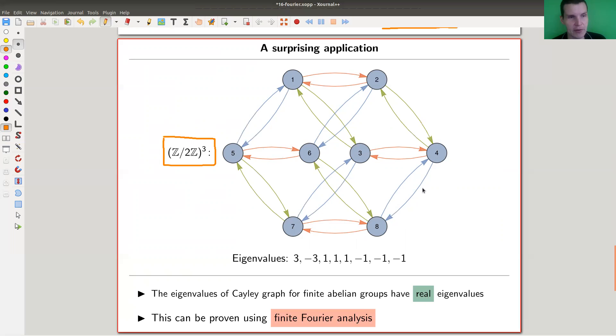If you put this into a matrix and calculate its eigenvalues then you will see only real eigenvalues. That's true for all Cayley graphs of finite abelian groups which is very surprising. You could prove that using finite Fourier analysis.